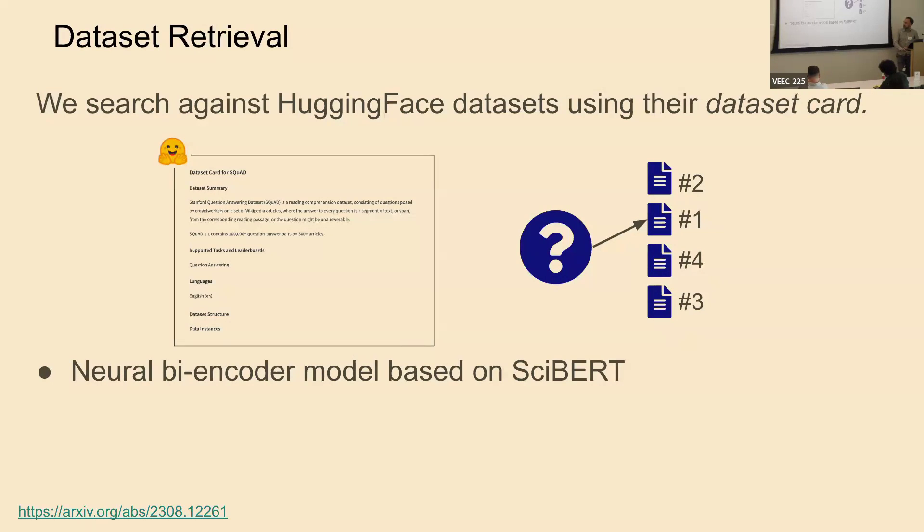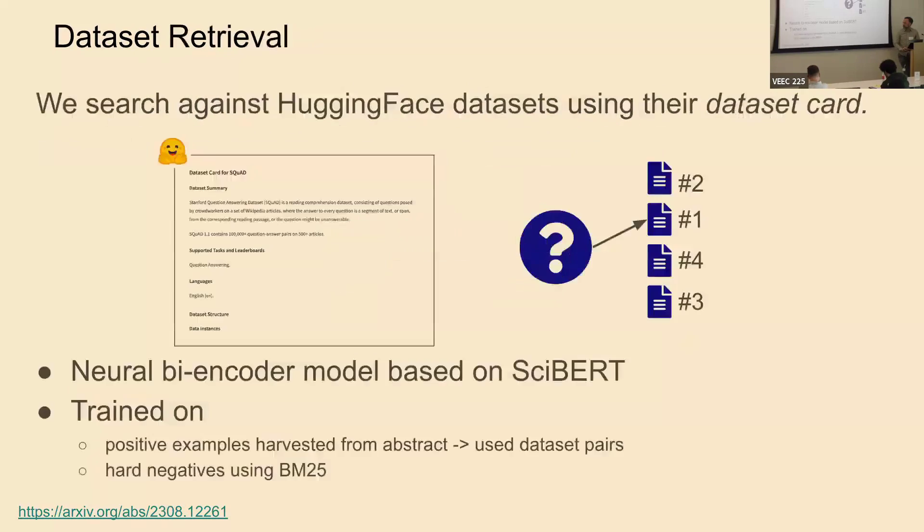We actually have a previous paper where we did this called DataFinder. The way we did this is we took a neural bi-encoder model based on SBERT, and we trained it on positive examples that were harvested with pairs of paper abstracts, which is kind of a concise description of what they did in the paper, and the datasets that were used in the paper. We actually used some data from AI2. That gave us positive examples, and then we got hard negatives using BM25. These are examples of dataset cards that don't match or that were not used in the paper.